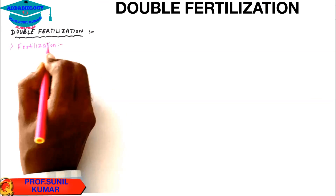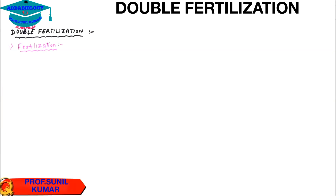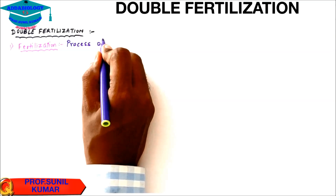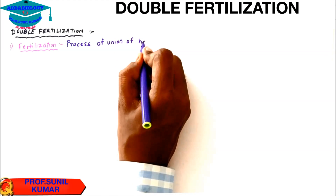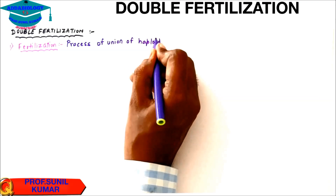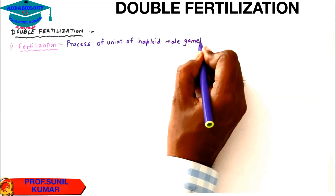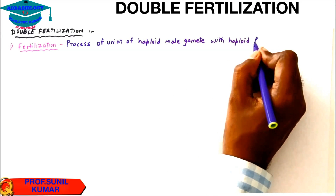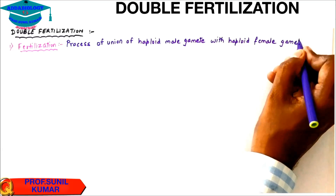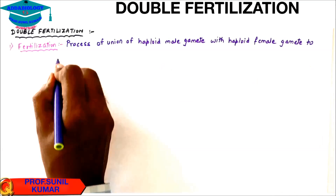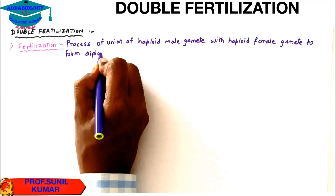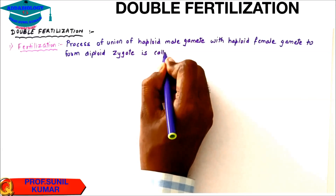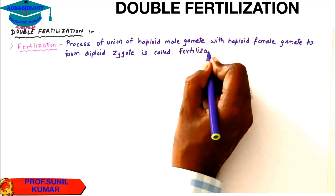Fertilization is defined as the process of union of a haploid male gamete with a haploid female gamete to form a diploid zygote — that is called fertilization. Now we need to understand that in angiosperms there is a special mechanism of reproduction.